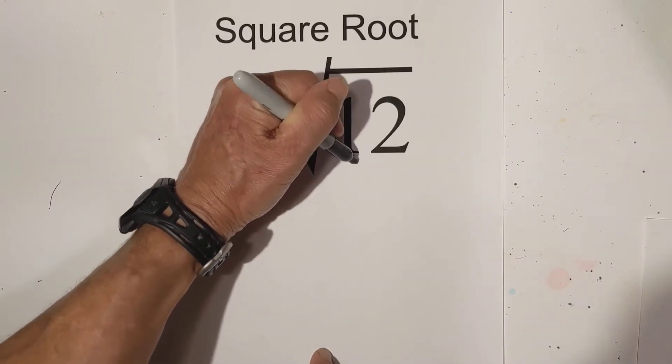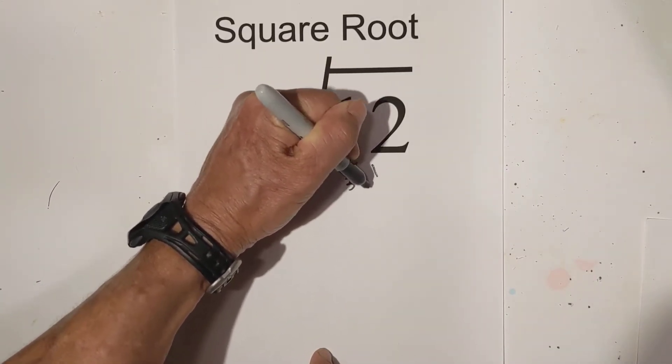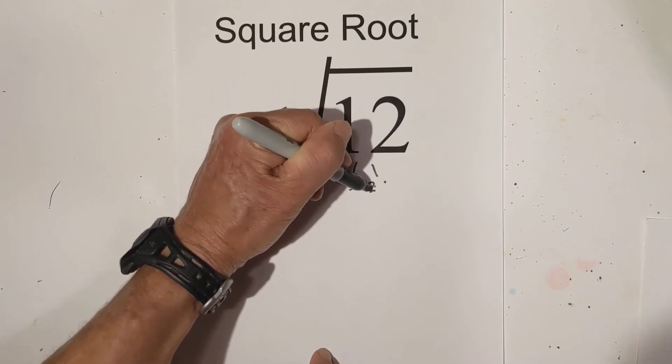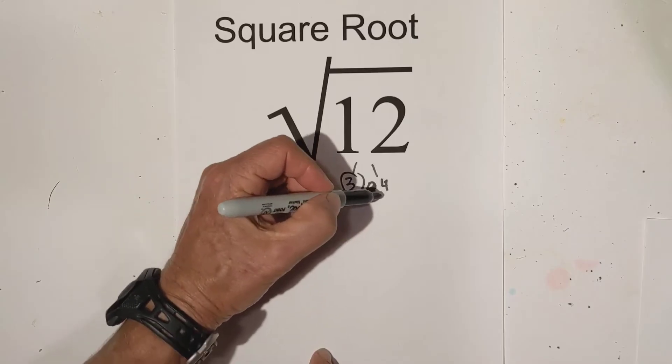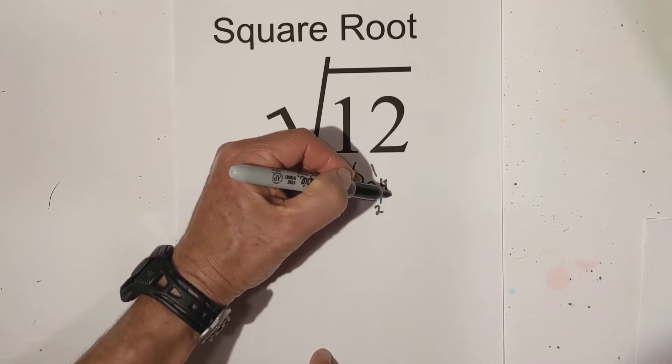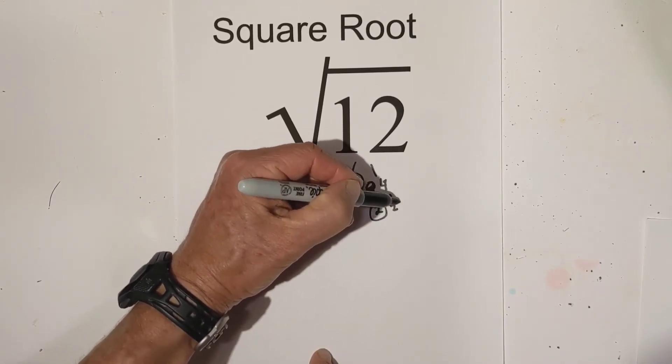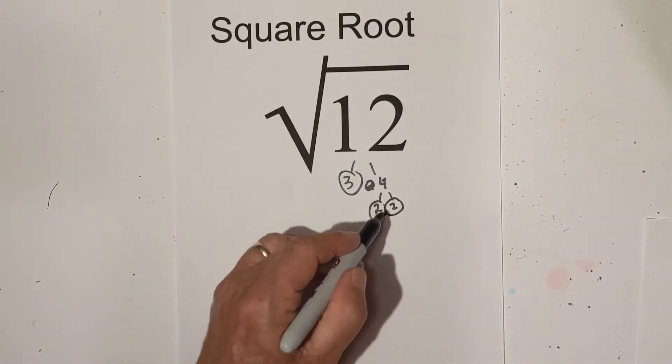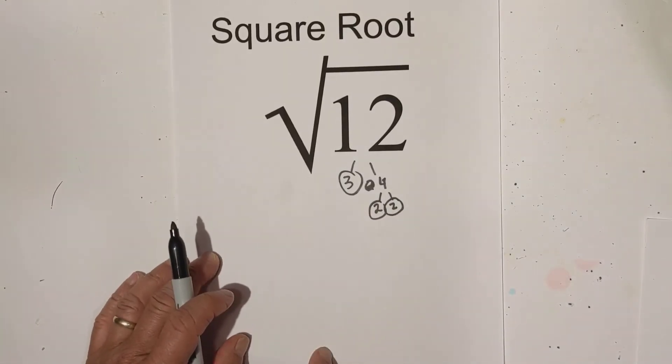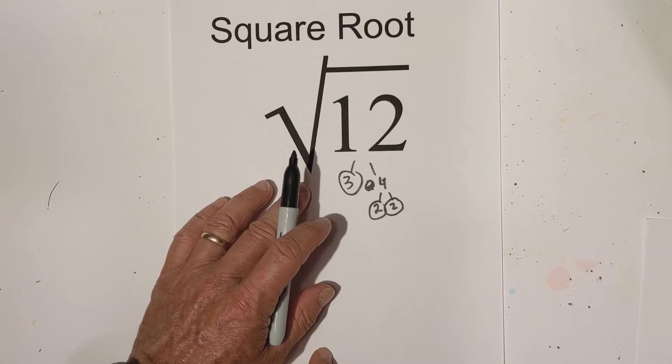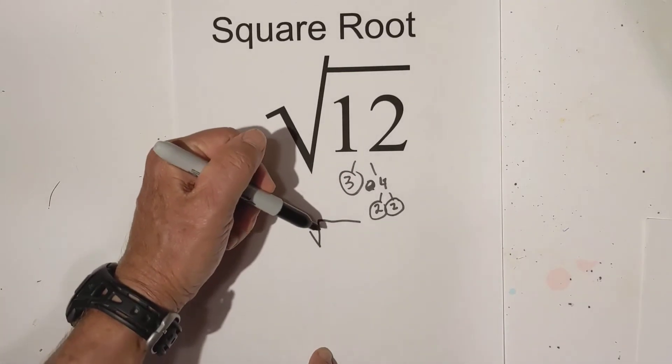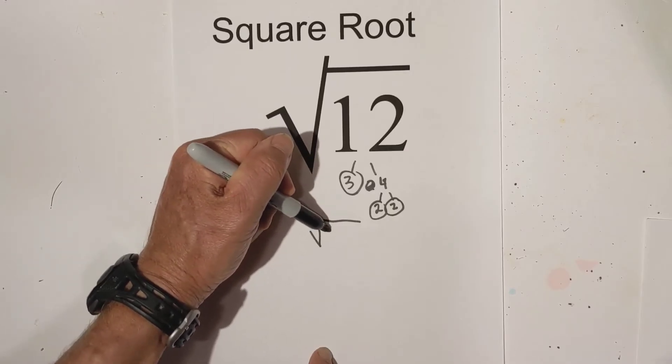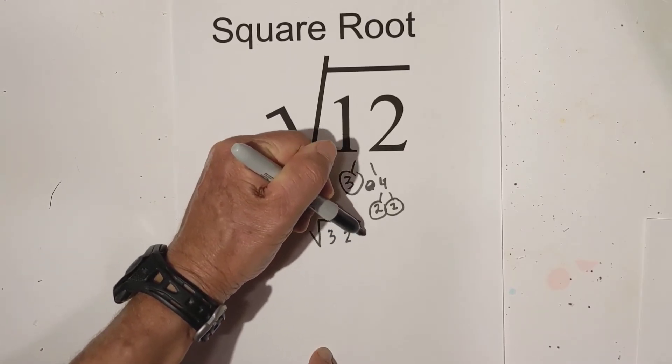So let's first complete a factor tree for square root 12. Three times four, and then circle the three because it is prime, and now two times two equals four. So we're down to just roots. So let's go ahead and do this. Let's write it back under the square root sign. And so we have three, a two, and a two.